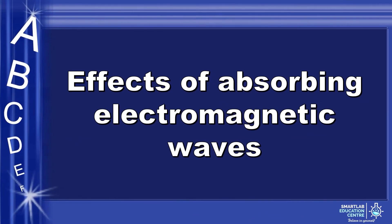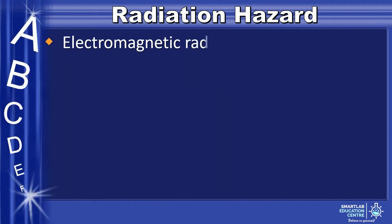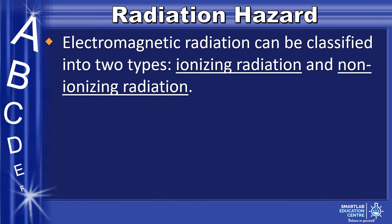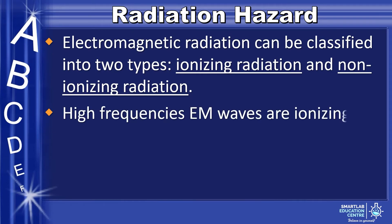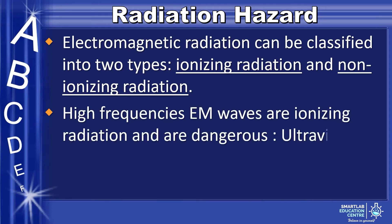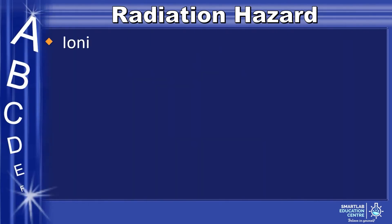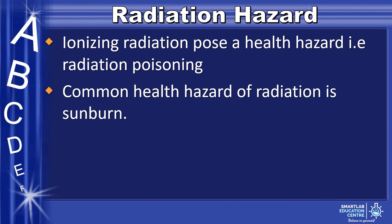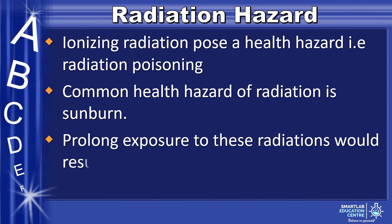Next, we discuss the effects of absorbing electromagnetic waves. Electromagnetic radiation can be classified into two types: ionizing radiation and non-ionizing radiation. High frequency EM waves are ionizing radiation and are dangerous — ultraviolet, X-ray, and gamma ray. Ionizing radiation poses a health hazard, or radiation poisoning. A common health hazard is sunburn due to too much exposure to UV light from sunshine. Prolonged exposure to these radiations results in radiation sickness, cancer, and genetic damage.